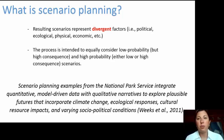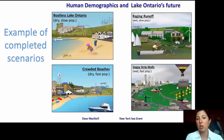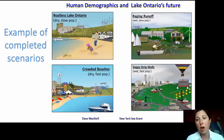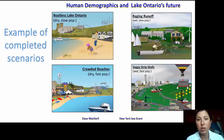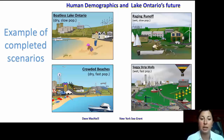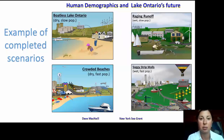I thought it would be helpful to look at a few examples of completed scenarios — I'll go quickly since Crystal will cover her scenario in depth. One example was put together for Lake Ontario, looking at population growth paired with precipitation. Each quadrant combines two variables at their extremes: dry and slow, wet and slow, wet and fast, or dry and fast. Each picture visually represents the resulting scenario for that specific quadrant — for example, dry conditions with slow population growth and what that means for the lake's ecological system.